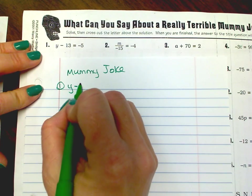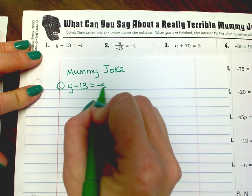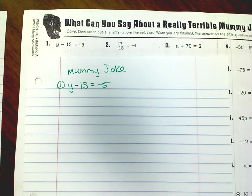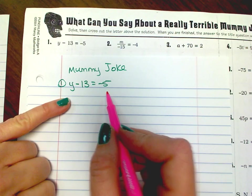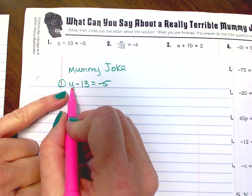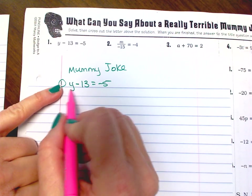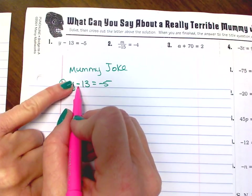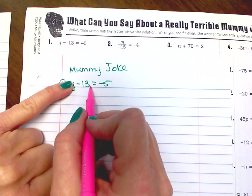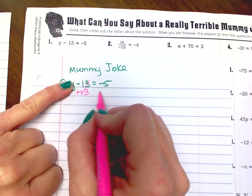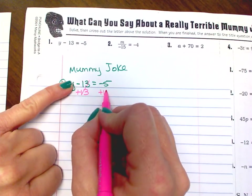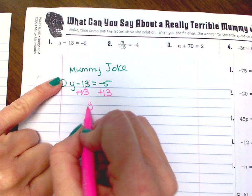We have y minus 13 equals negative 5. I want to get y all by itself, so I need to cancel out the negative 13 on this side and move it to the other side. If I have a negative 13, I can remove it by adding 13, and that gives you 0, so that cancels out. But whatever you do to that side, you must do to this side.